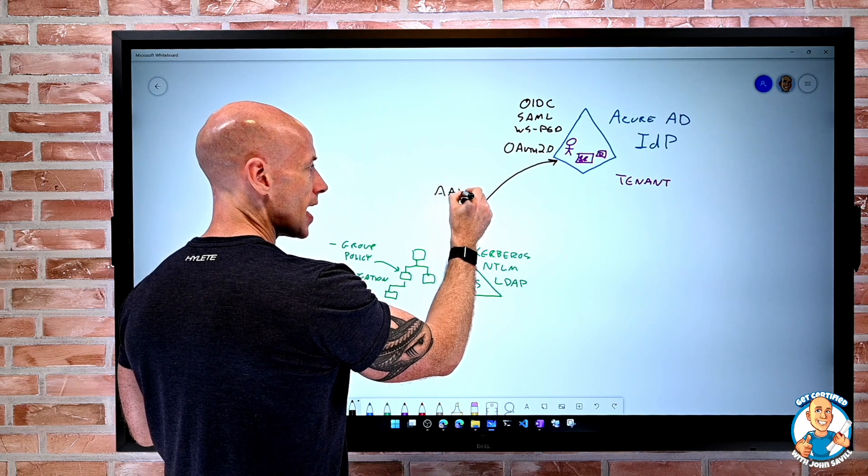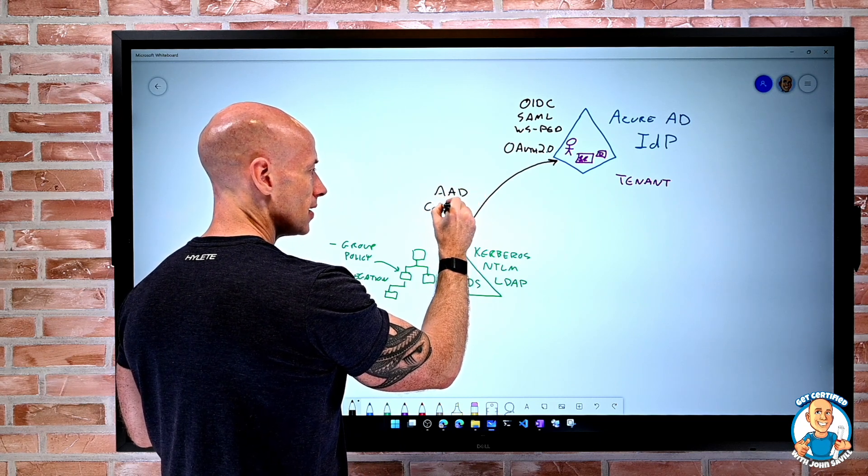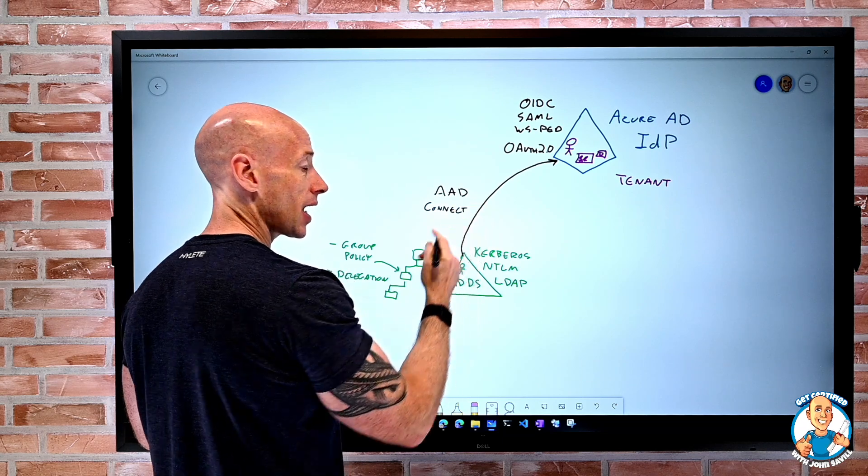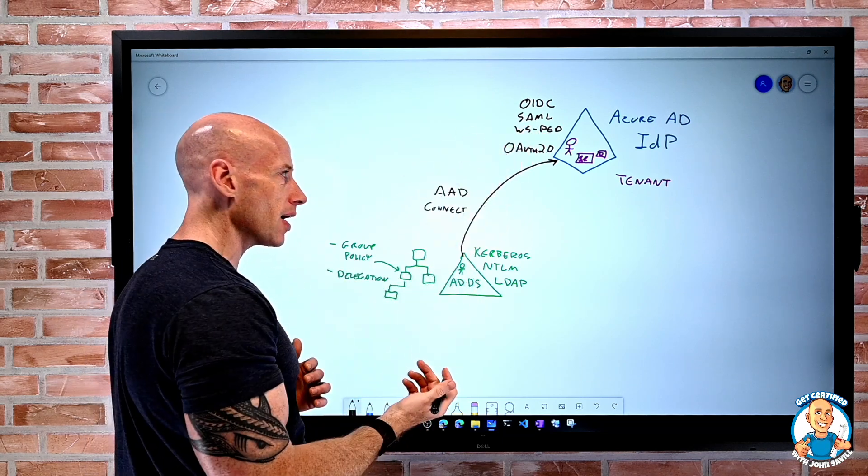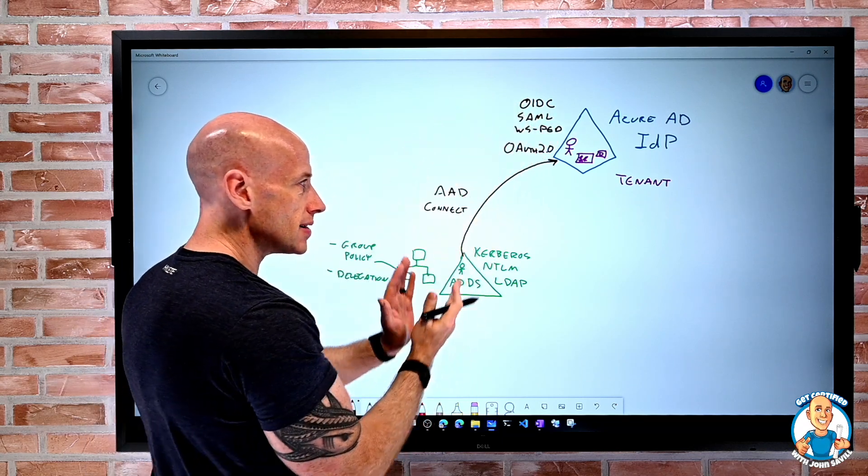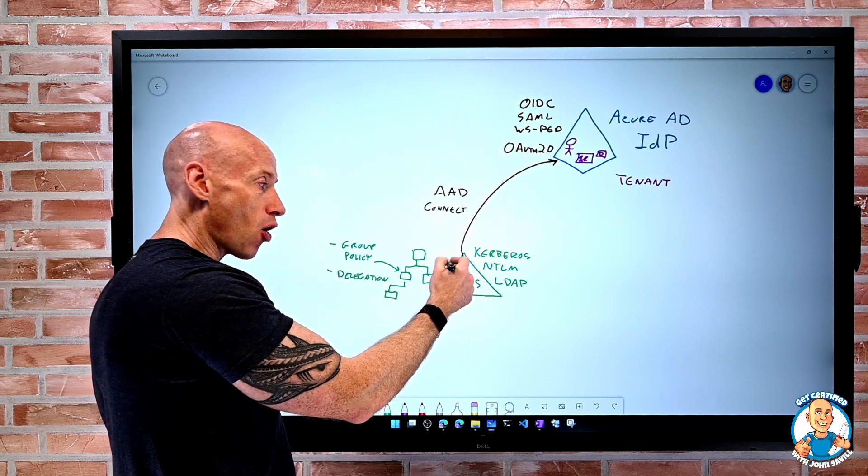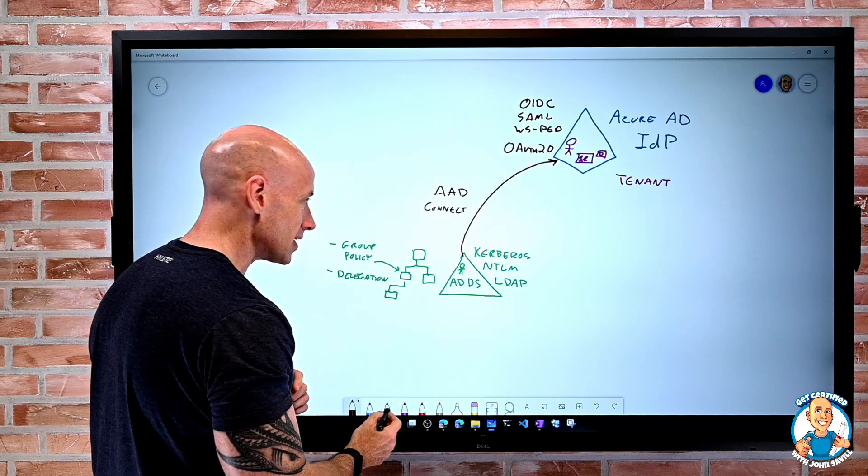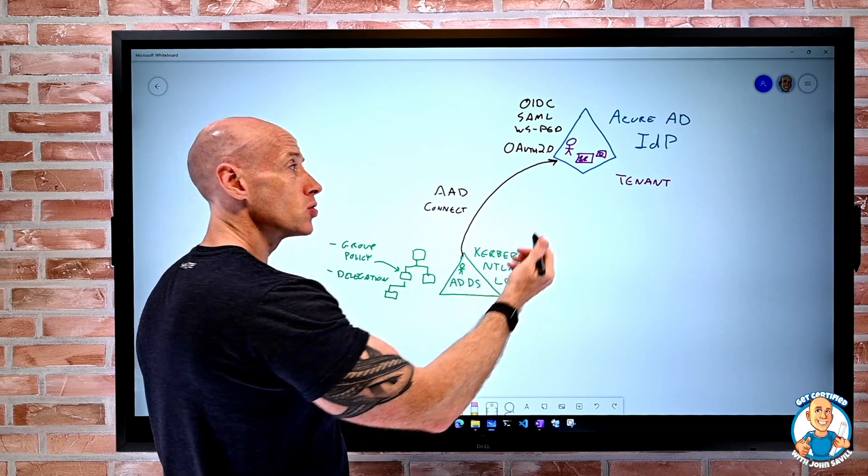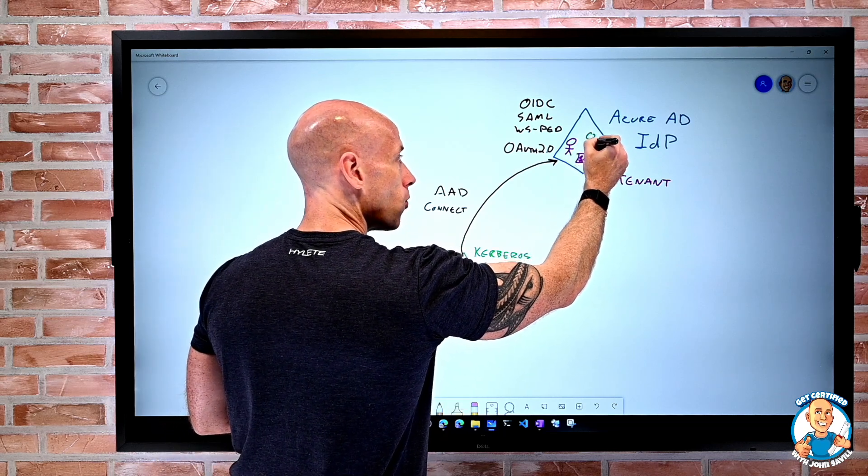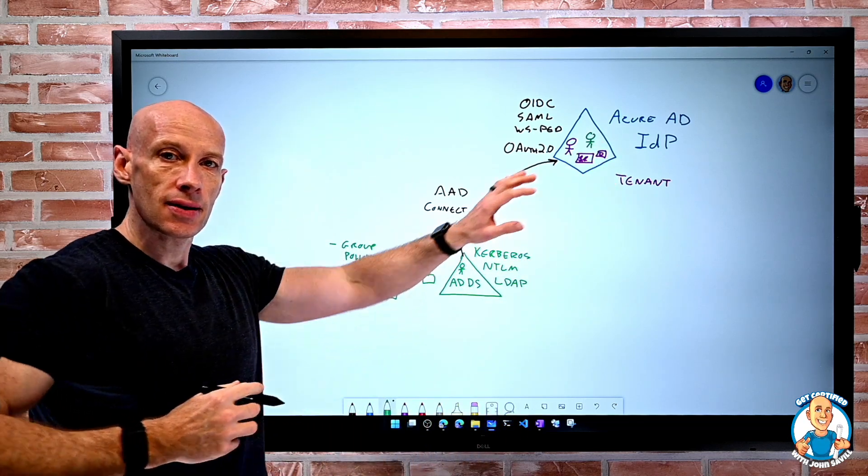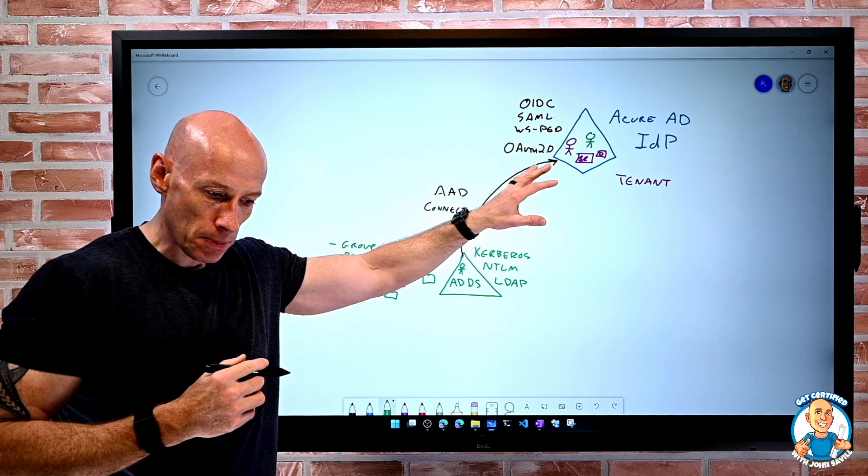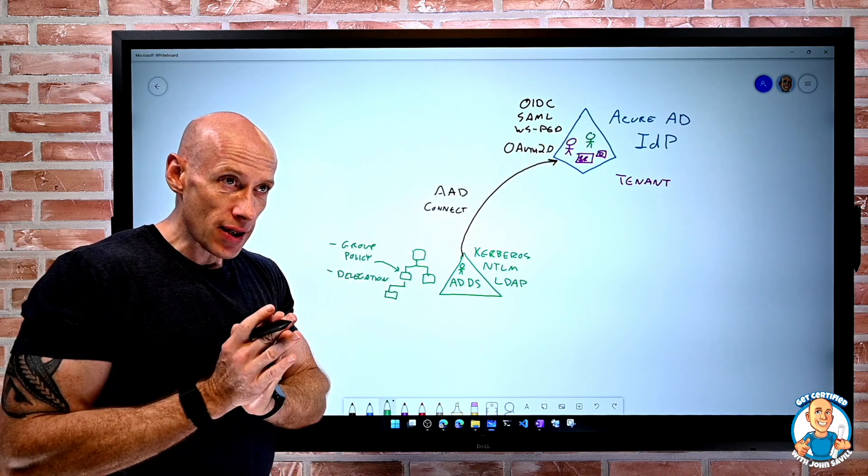There's Azure AD Connect and Azure AD Connect cloud sync where the engine runs in the cloud. This synchronizes from my on-prem AD to Azure AD, so my selected users and groups will have instances in Azure AD as well. That's a key point.